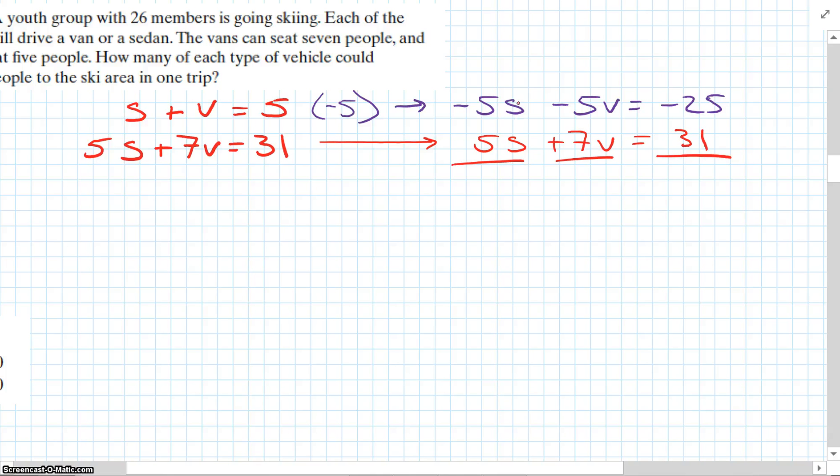Now we just add these together. The s's are going to cancel, 5s and negative 5s. Negative 5v plus 7v is 2v. Negative 25 plus 31 is 6. So 2v = 6, which means v = 3. So we need to take three vans.